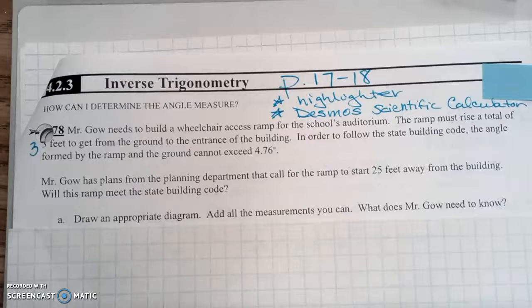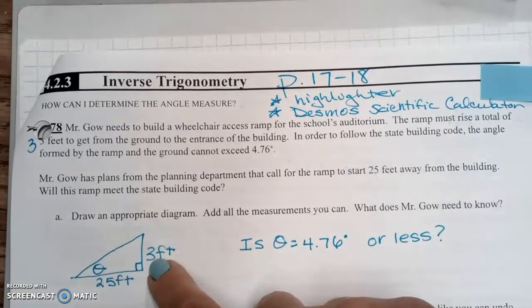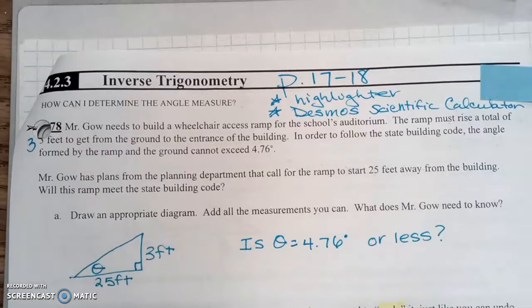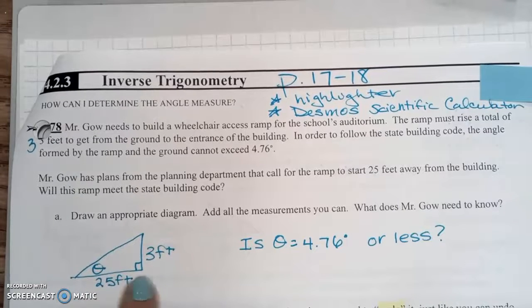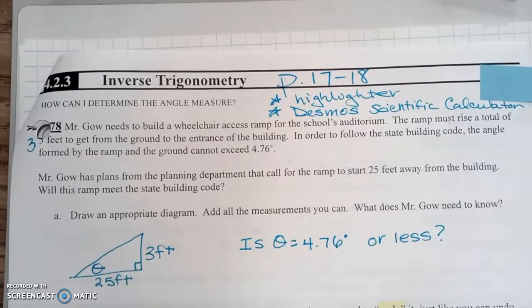Will the ramp meet the building code? Draw an appropriate diagram, add all the measures you can or the measurements, and what does Mr. Gao need to know? So the ramp needs to gain three feet from the rest of the area up to the doorway. They're going to start it at 25 feet away for the ramp. That angle in there, we're just going to put that little theta symbol.